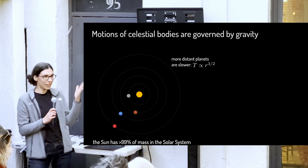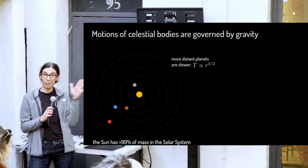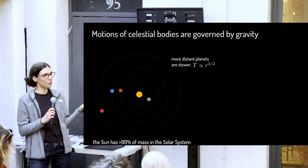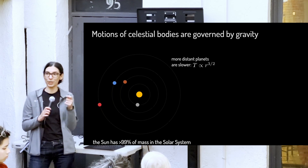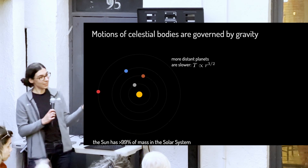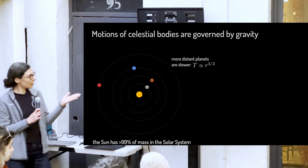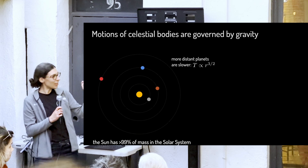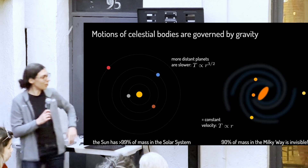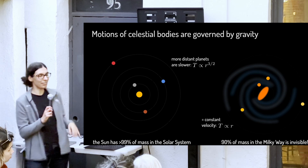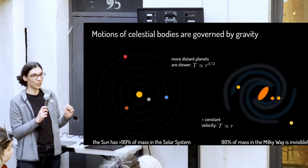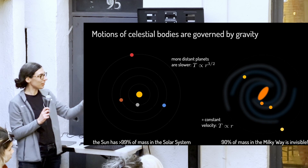We thought this should work everywhere else in the universe. A few centuries later, when we were able to start measuring velocities of stars throughout the Milky Way galaxy, this is what we expected — stars closer to the center moving faster than those farther out. However, what we actually measured is that the velocity is pretty much the same regardless of where the star is from the center of the galaxy.